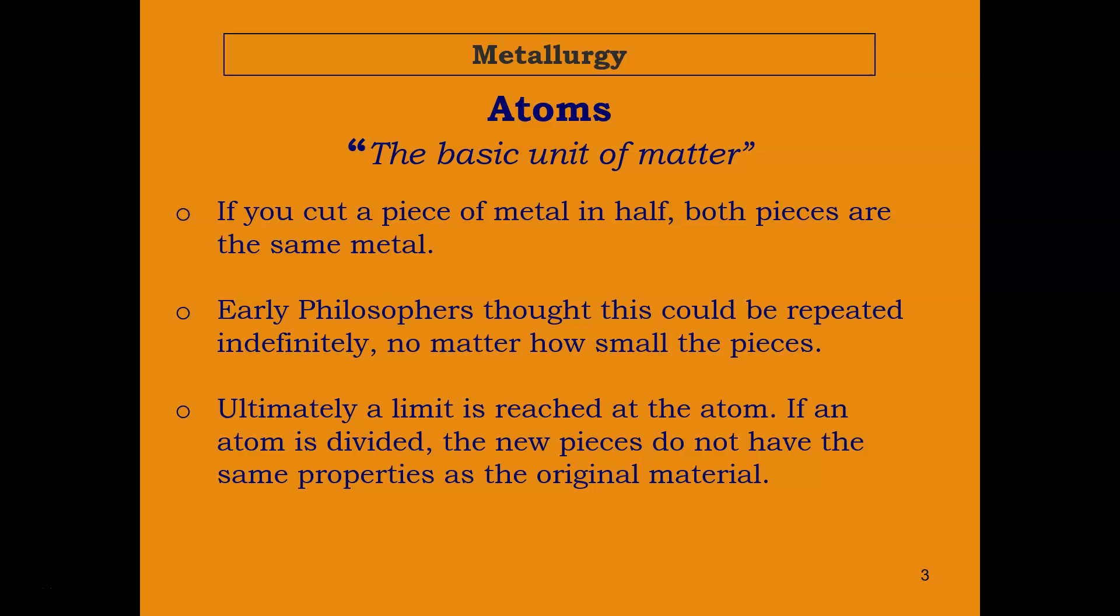Atoms is the basic unit of matter. If you cut a piece of metal in half, both pieces are the same metal. Early philosophers thought this could be repeated indefinitely, no matter how small the pieces. But through modern science, we know that's not true. Ultimately, a limit is reached at the atom. If an atom is divided, the new pieces do not have the same properties as the original material.